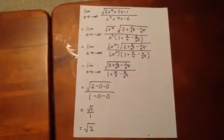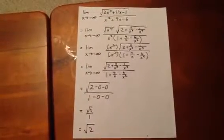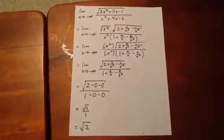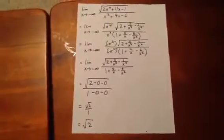And ultimately, that equals the square root of 2. So the limit as x goes to negative infinity of the original expression is the square root of 2.